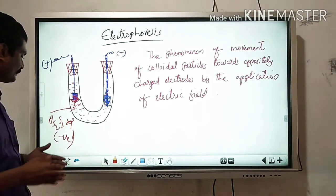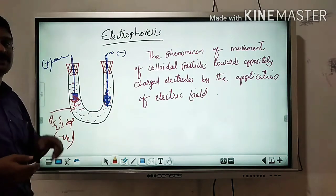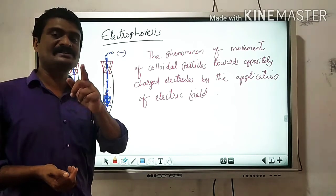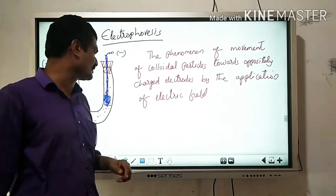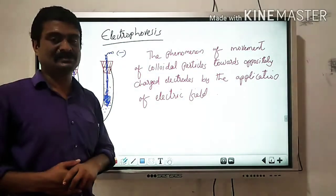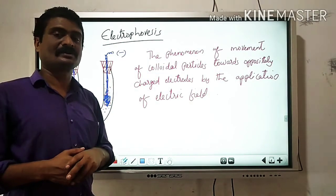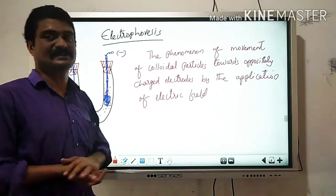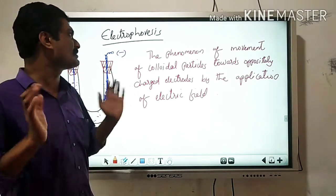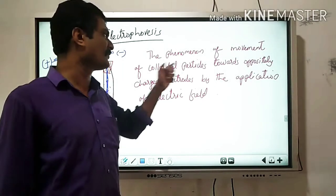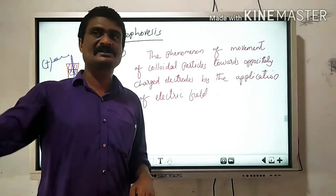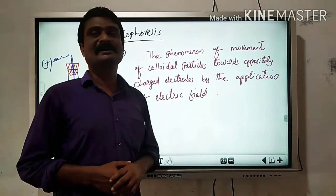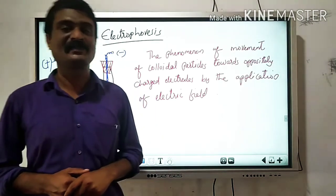If we take ferric hydroxide sol, which is positively charged, the positively charged ferric hydroxide particles move towards the negative electrode — the cathode — and coagulation takes place at that electrode. The phenomenon of movement of colloidal particles towards the oppositely charged electrode by the application of an electric field is called electrophoresis.